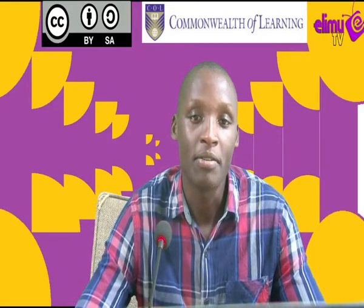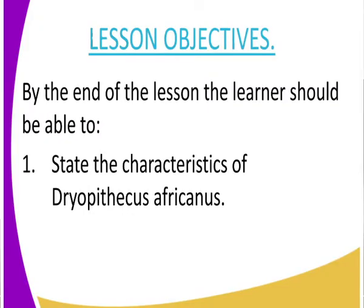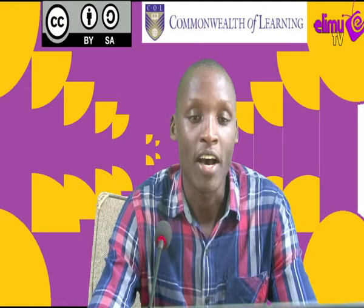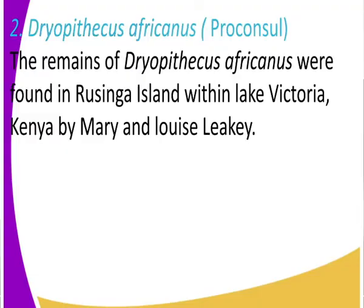Now class, by the end of the lesson I expect that each and everyone of us will be able to state the characteristics of the Aegeopithecus africanus. And I said, if you want to understand the evolution of man, you must first get to know where it was first found and also the features of those development stages.